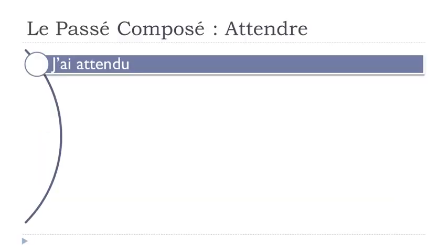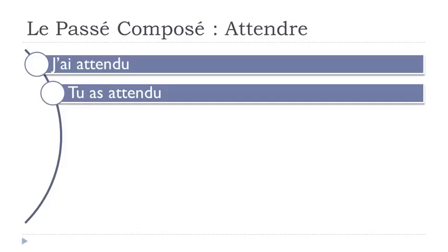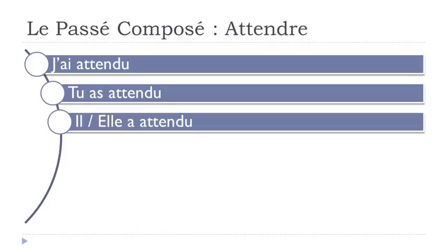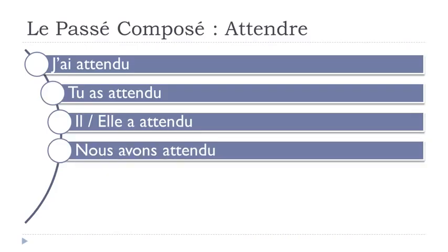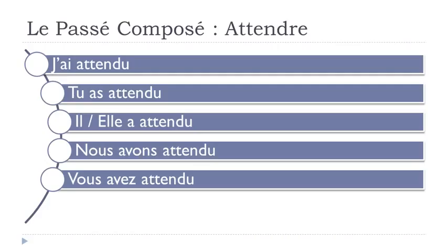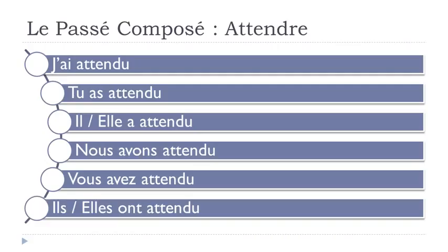So let's see how it goes now. J'ai attendu. Tu as attendu. Il a attendu. Elle a attendu. Nous avons attendu. Vous avez attendu. Ils ont attendu. Elles ont attendu.